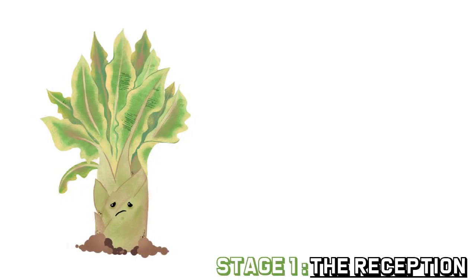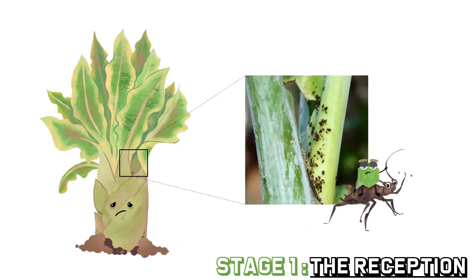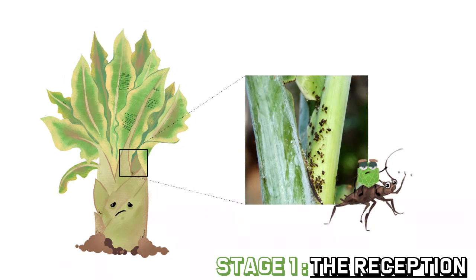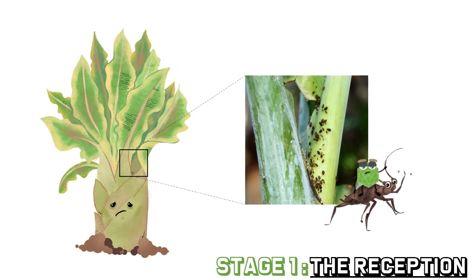Stage 1: The Reception. The infection begins on the basis of its leaf petiole. Zooming in, we can see a bunch of these banana black aphids, or Pentalonia nigronervosa. These are the ideal locations for them to feed while they transfer the banana bunchy top virus, or BBTV, that they carry.